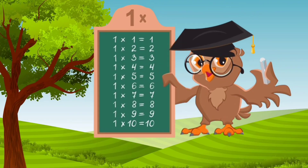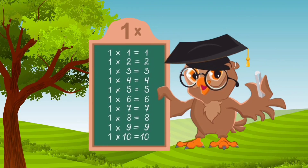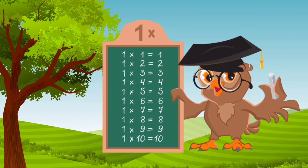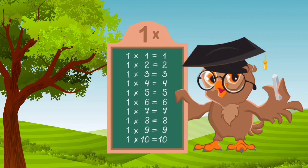Repeat. 1 1s are 1, 1 2s are 2, 1 3s are 3, 1 4s are 4, 1 5s are 5, 1 6s are 6, 1 7s are 7, 1 8s are 8, 1 9s are 9, 1 10s are 10.